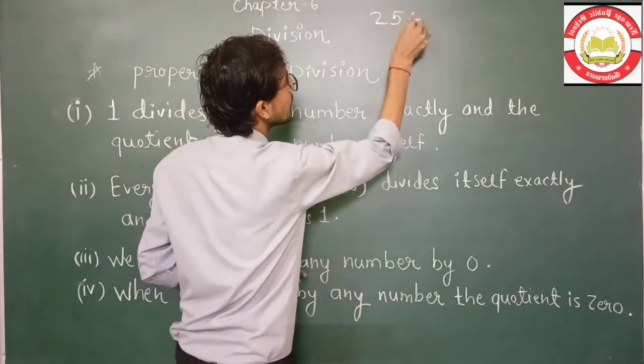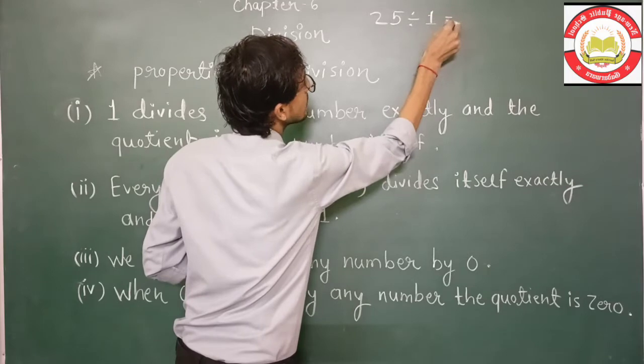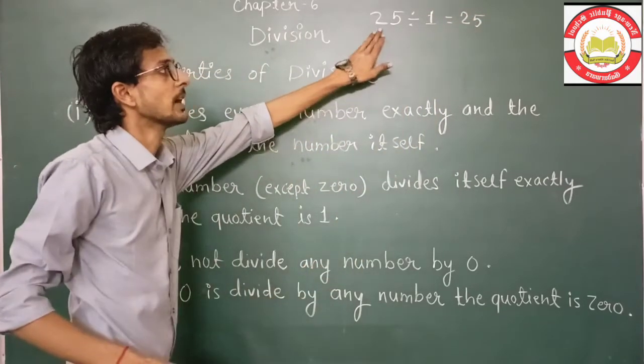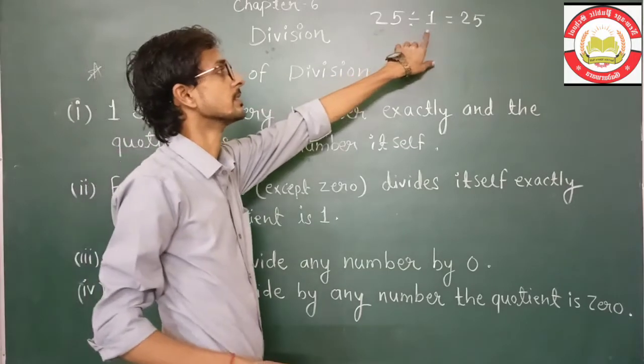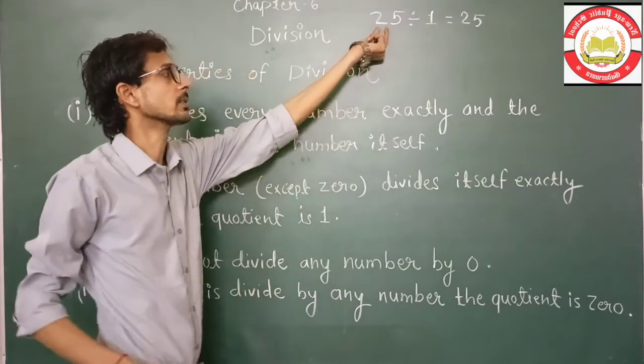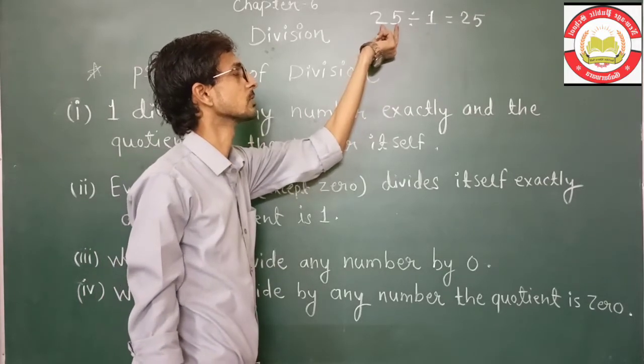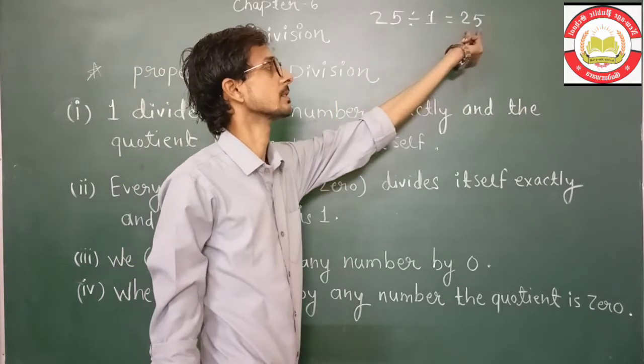25 divided by one, so answer will be 25. So dekho, 25 is your dividend and one is a divisor. So jab bhi dividend koi number hoga or divisor one hoga, to always jo dividend ka jo number hai wahi aapka answer hoga.